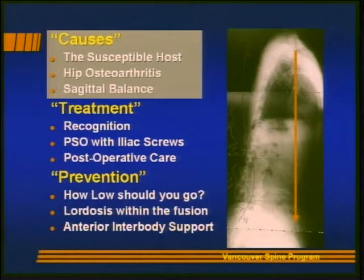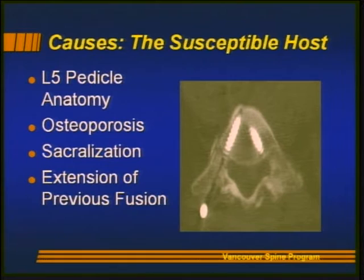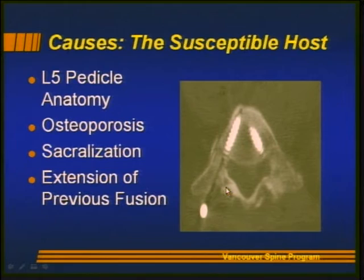First, let's look at causes of caudal junctional failure. The first cause is the susceptible host. The L5 pedicle is different from all other adjacent pedicles — it tends to be wider and to have softer bone, perhaps 'patchless' in quality. This predisposes patients to the kind of failure we see here: a stress fracture through an L5 pedicle, with a broad wide pedicle likely fitted with an undersized screw. The L5 pedicle anatomy is the first problem, and ending a long fusion at L5 warrants careful consideration.